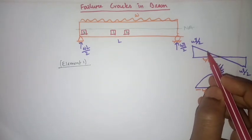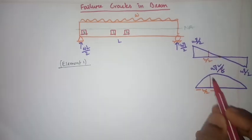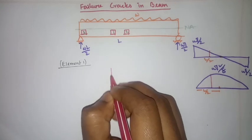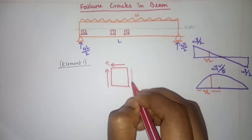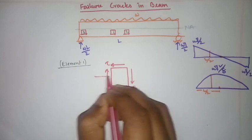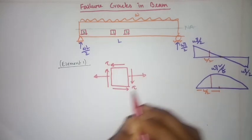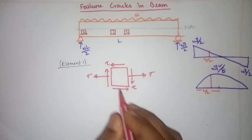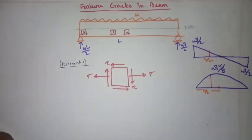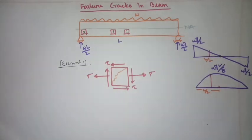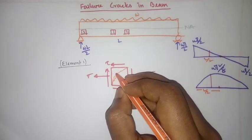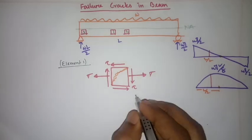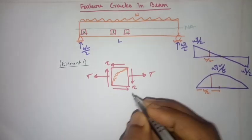For element one, at this point both shear and bending are acting. If I draw the block, there is bending stress and shear stress both acting on it. For this combined stress condition, the crack will develop in a way that somehow goes vertical and then bends — so both flexural and shear cracks will be developed.